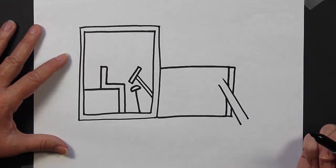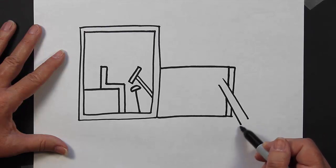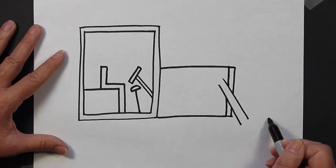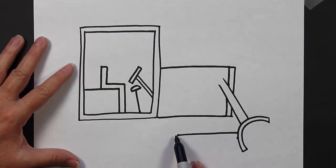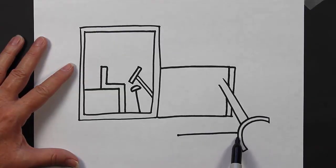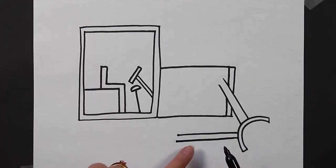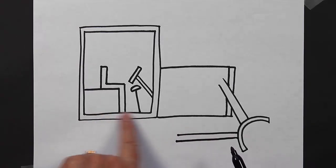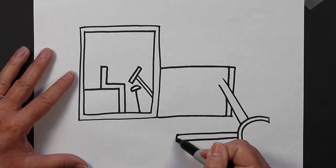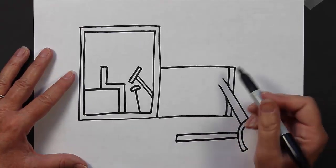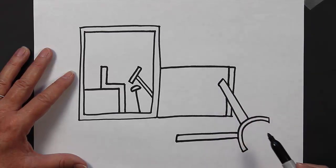Next we're going to create the actual bucket. We hook it on to this area right here, creating a straight line coming out from that bucket and another straight line coming out from that bucket. It might look like it's just kind of hanging out in the air, but we're going to put a track right here surrounding it. Let's close up those two lines, and then close up these two lines up here.